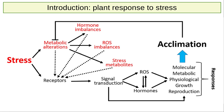There is currently a broad consensus in classifying plant hormones into nine groups: abscisic acid, auxins, cytokinins, ethylene, gibberellins, jasmonate, salicylic acid, strigolactones, and brassinosteroids. This last group of phytohormones is the one on which we are going to focus our analysis.